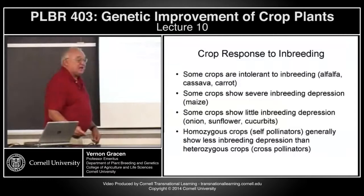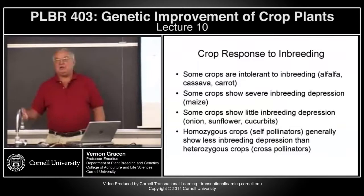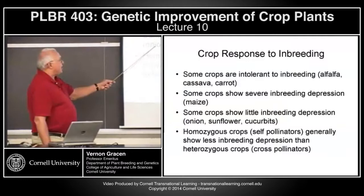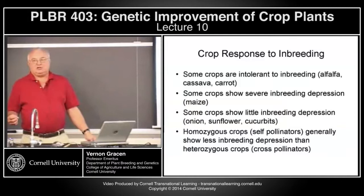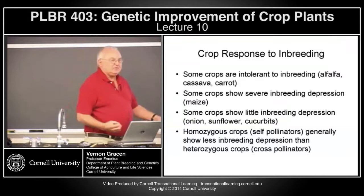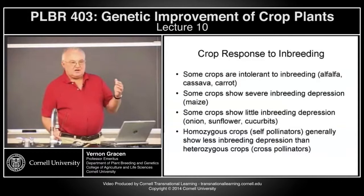Some crops are intolerant. Alfalfa, cassava, and carrot — you start inbreeding and in the first generation you almost get no seed. Maize shows severe but manageable inbreeding depression. Crops like onions, sunflowers, and cucurbits don't show much inbreeding depression. Of course, homozygous crops show less inbreeding depression because they're normally self-pollinated inbred, but those self-pollinated crops can be very vigorous homozygous inbred plants.